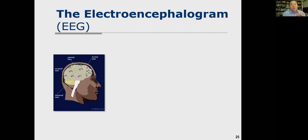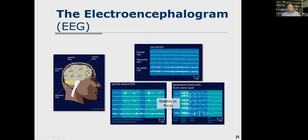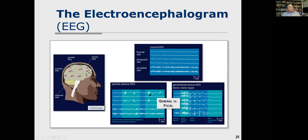We measure the brain's electrical activity using an electroencephalogram or EEG, placing electrodes over the frontal, parietal, occipital, and temporal lobes. A normal resting EEG shows some occipital activity related to vision. A partial seizure EEG shows excess activity in some regions, while a generalized seizure EEG shows electrical activity across all regions. During generalized seizures, in addition to movements, the person typically loses consciousness.